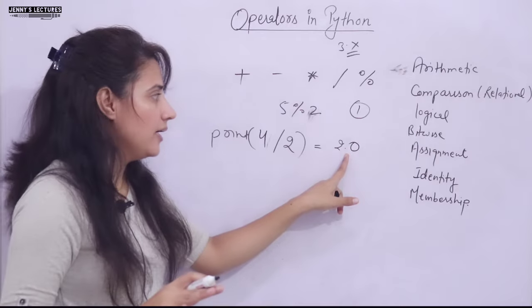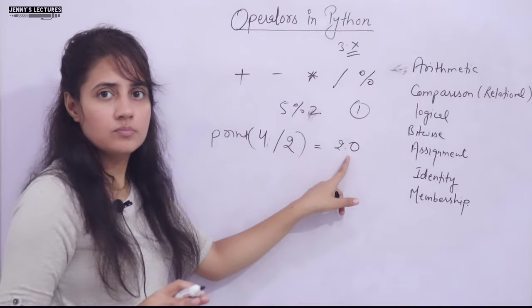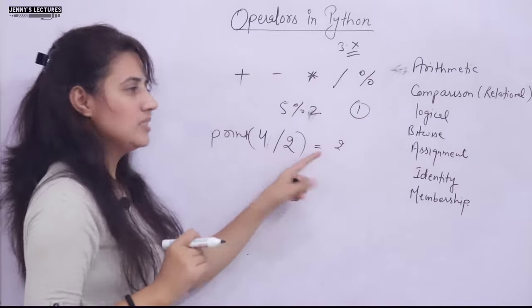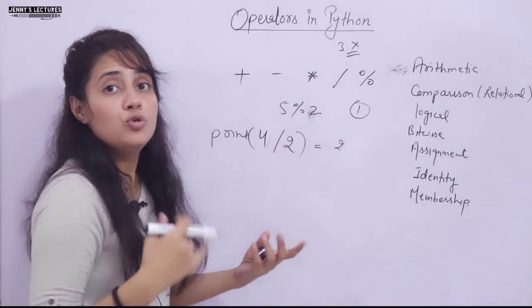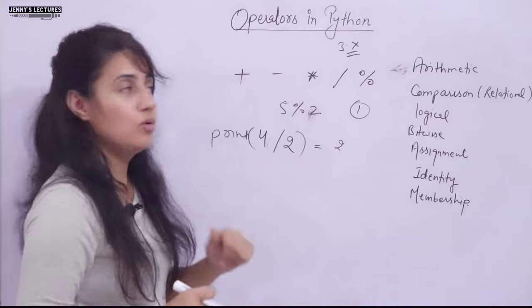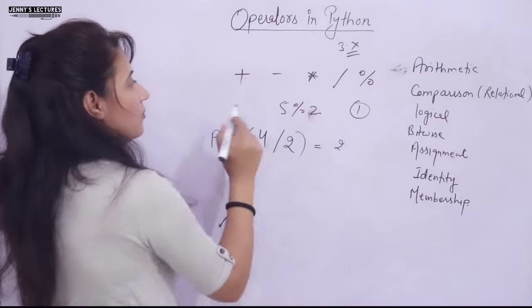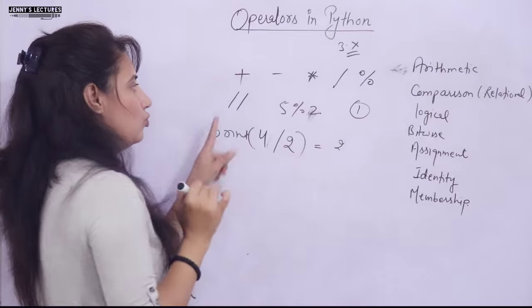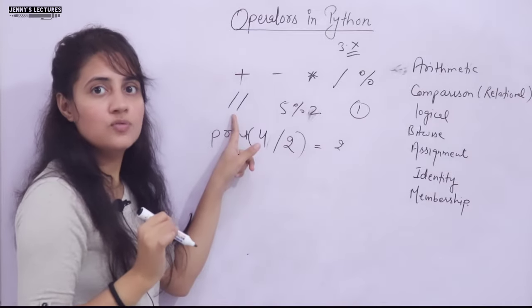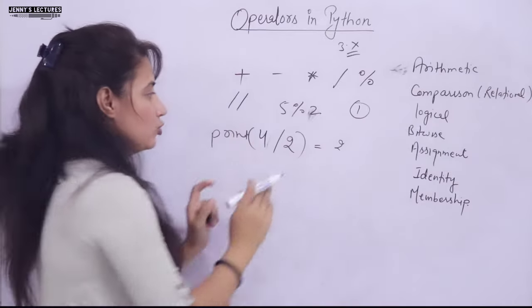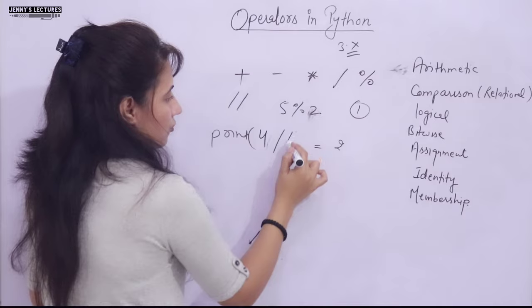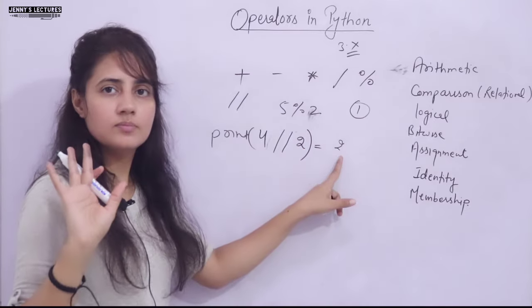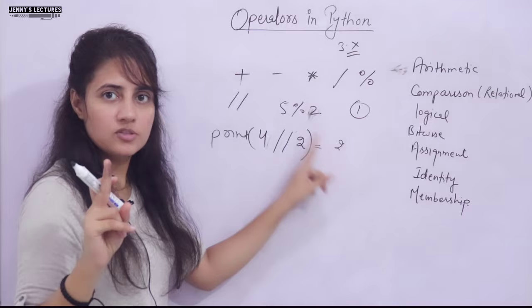If you want to get an integer value from division — for example, just 2 instead of 2.0 — you can use floor division. Floor division is represented by double slash (//). So writing '4 // 2' will give you 2, not 2.0.